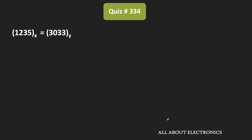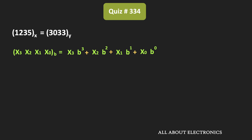Since we do not know the base of these numbers, what we can do is convert these two numbers into their decimal equivalent and equate them. If we have any number in some particular base B number system, then by expressing that number in the powers of B, we can convert it into the decimal equivalent, where B is the base of that number.